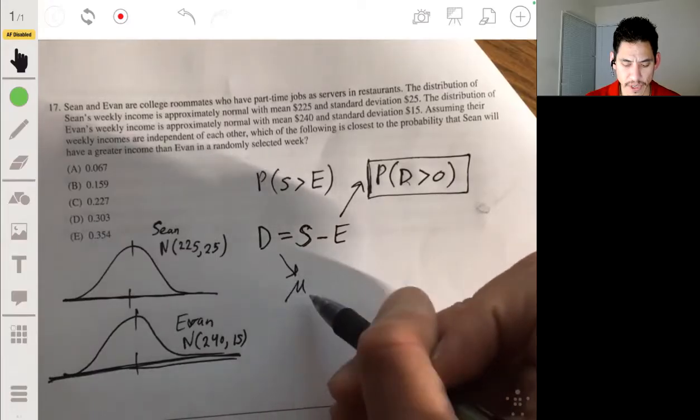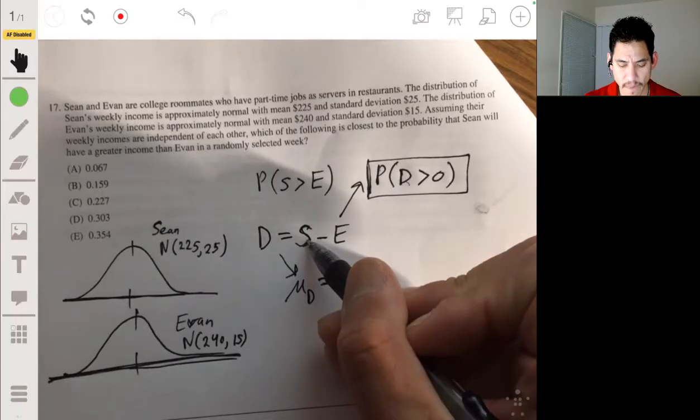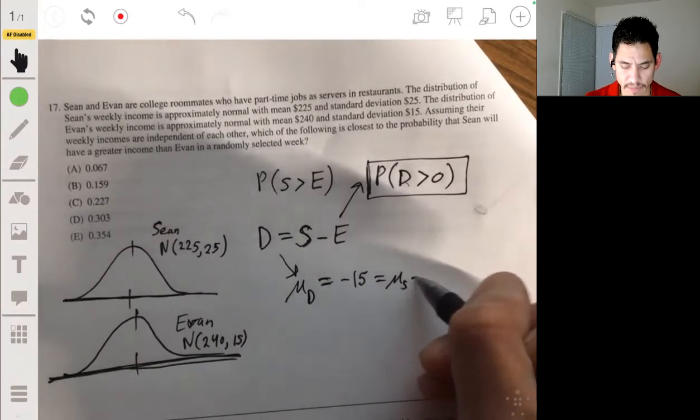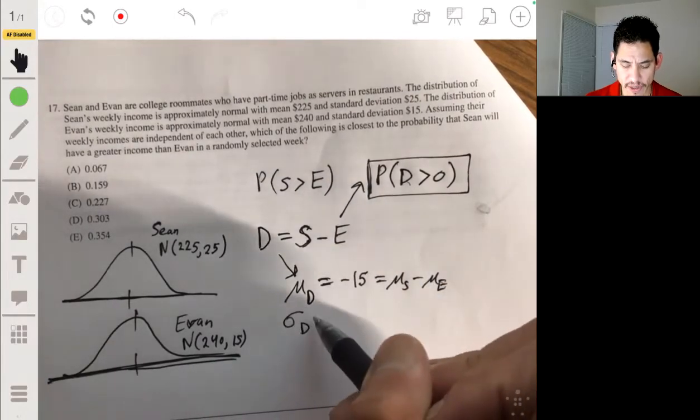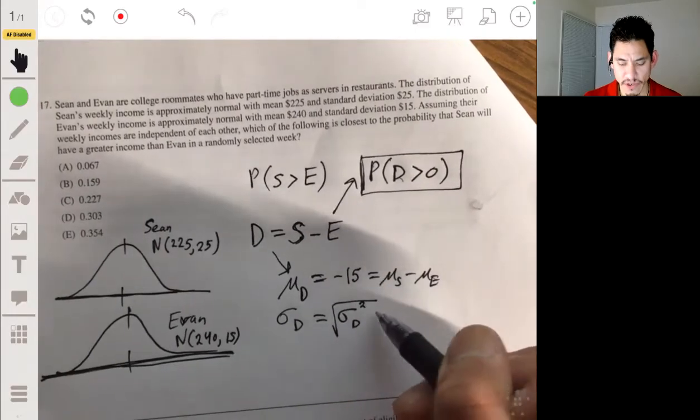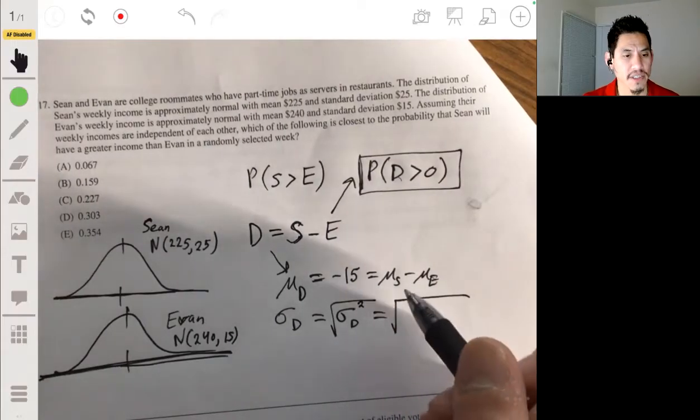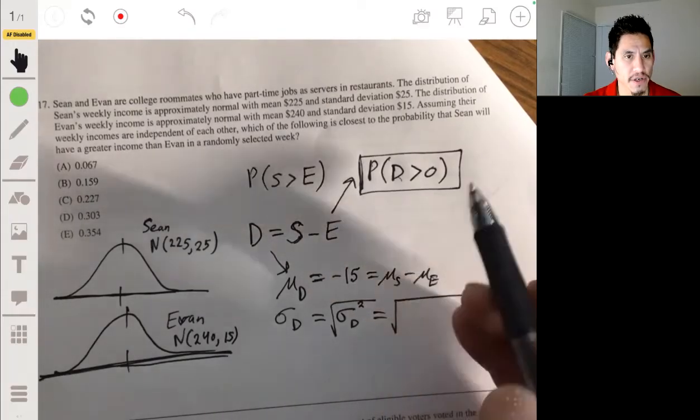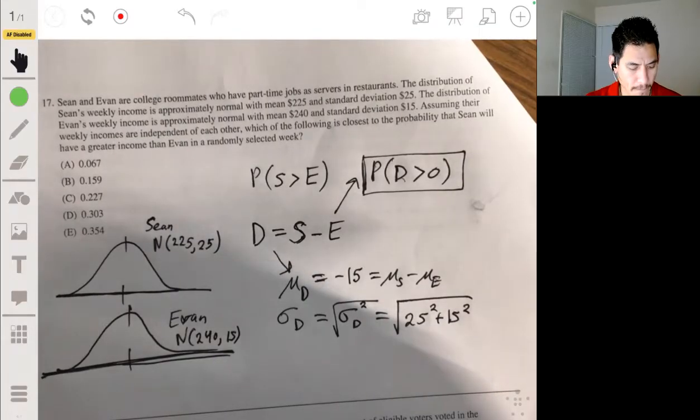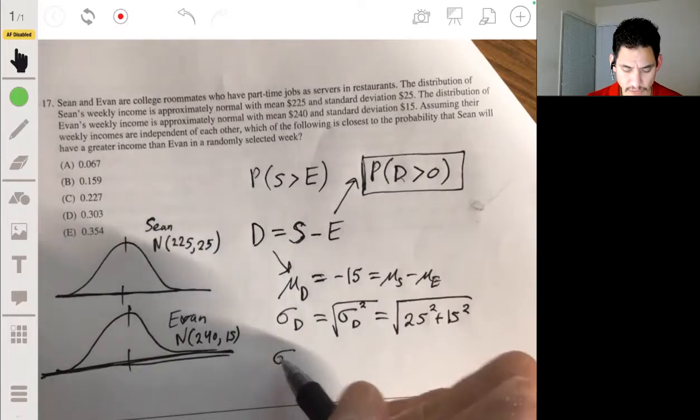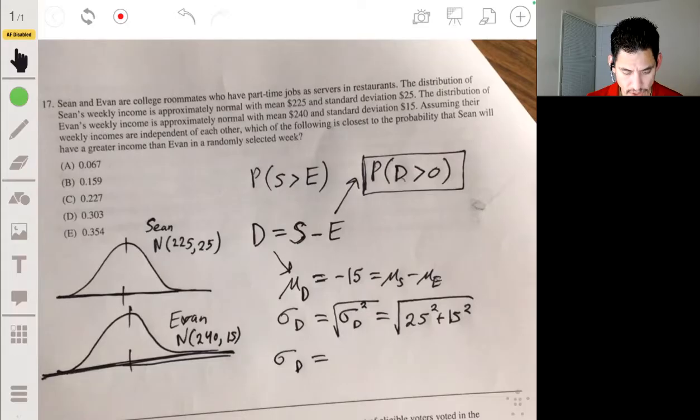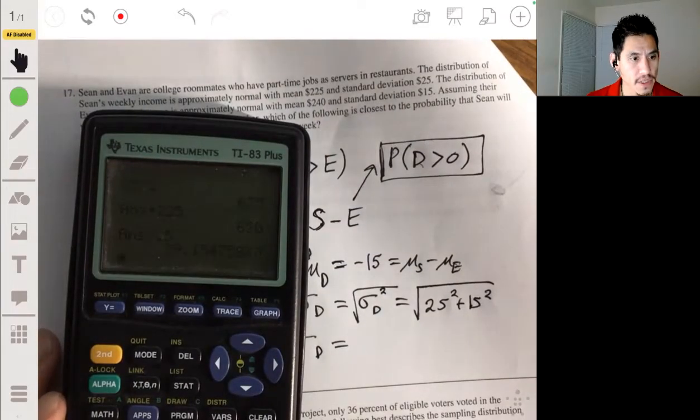Because for Sean to be more than Evan's, that means that would be the same as this difference being greater than 0, being positive. So we want to find the probability that D is greater than 0 with this distribution. So we're going to have a new distribution where the mean of the difference will be equal to 225 minus 240 or negative 15. Because again, the mean of S minus the mean of E. And the standard deviation will be equal to the square root of the variance. So we have to find the variance first, which is essentially the standard deviations of each distribution squared. So it'll be the square root of 25 squared plus 15 squared. So the standard deviation of D will be equal to the square root of 25 squared plus 15 squared. So it'll be about 29.15.